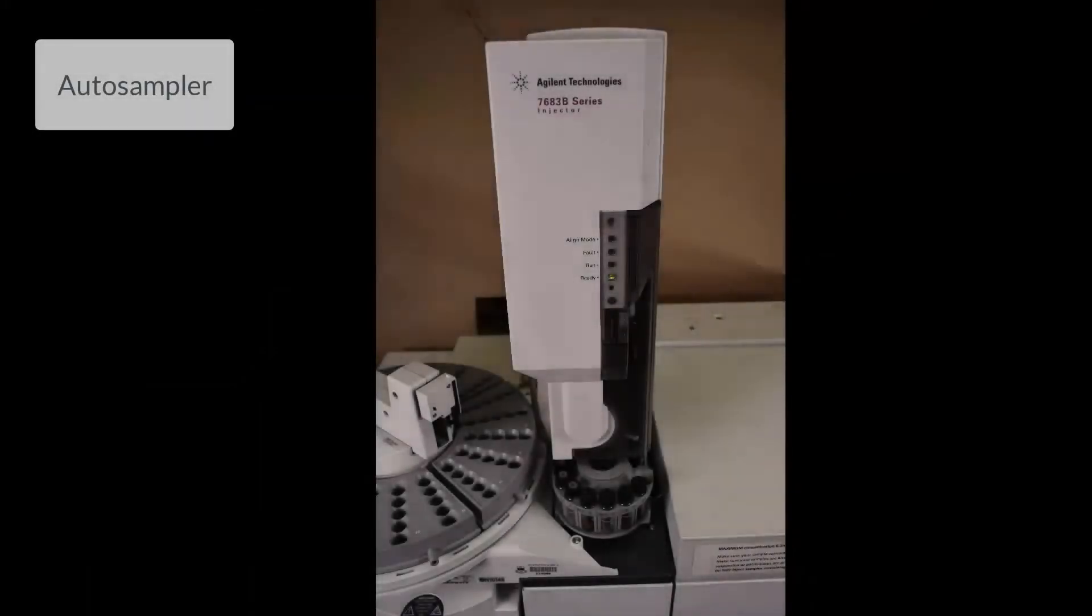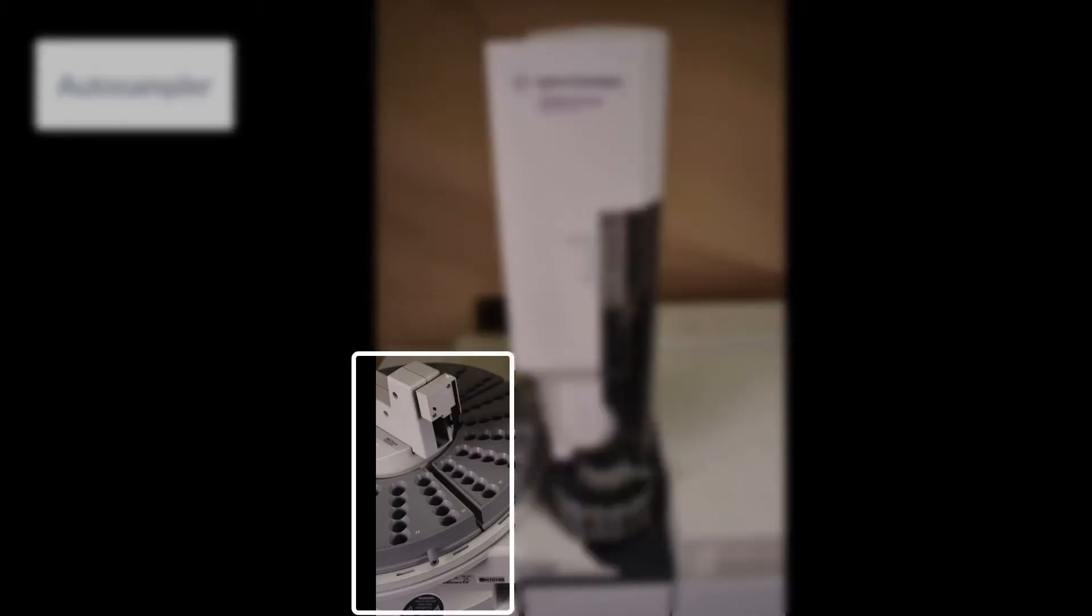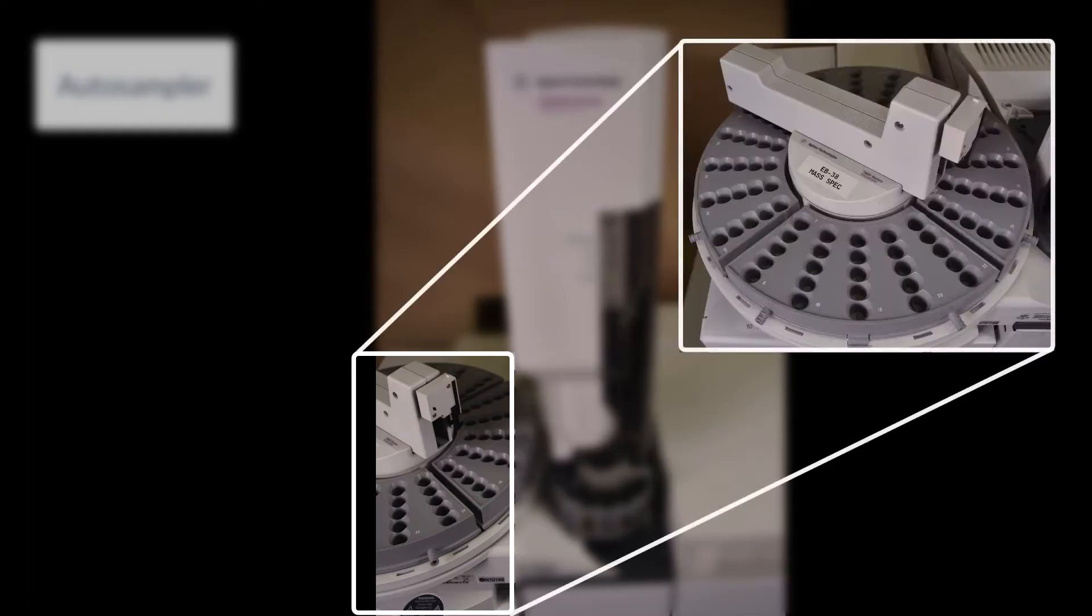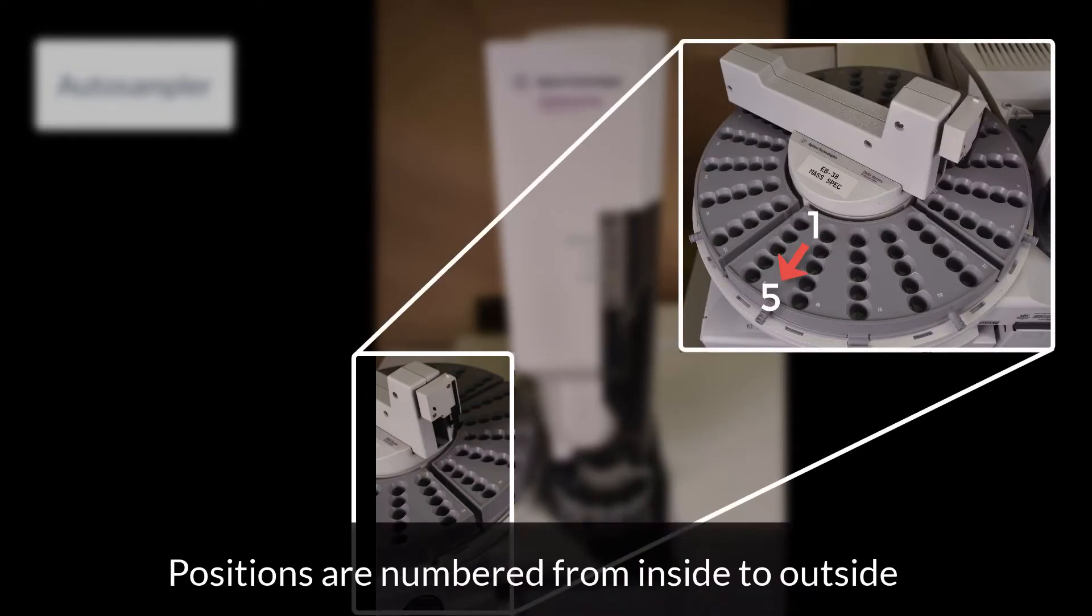The auto-sampler allows for fast sample introduction, as well as multiple injections done by the instrument itself. Here is the sample tray. Note that each position is numbered. Position numbers on the auto-sampler allow us to tell the instrument when and what sample to inject.